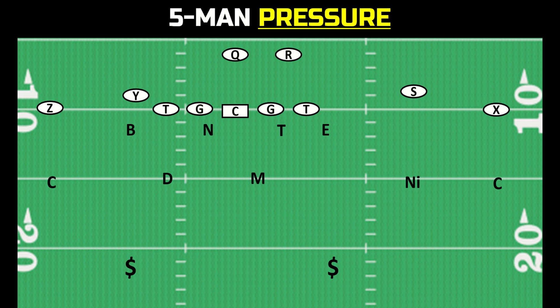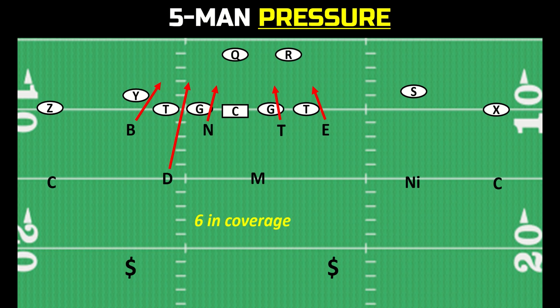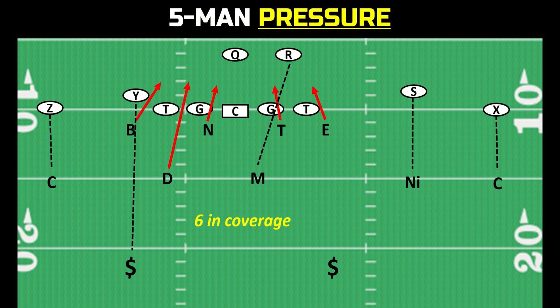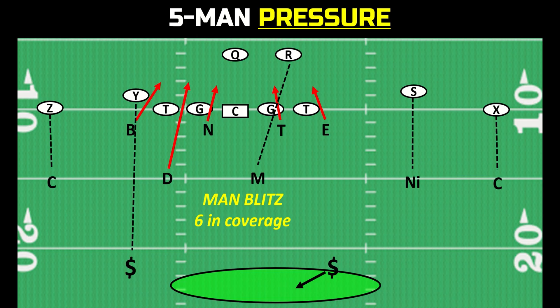When a fifth player — a linebacker or a defensive back — blitzes, that is called a pressure or a blitz. You have your four down linemen plus a linebacker or a defensive back rushing the quarterback, for a total of five rushing and six defenders in coverage. When you have pressure with man coverage behind it and a free post safety, that is simply called a man blitz. You'll also hear this as dog, or a dog coverage.